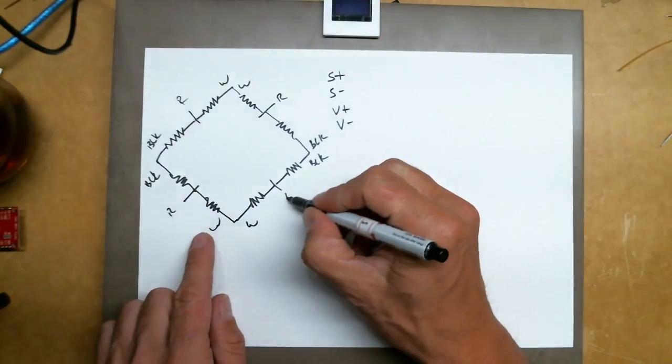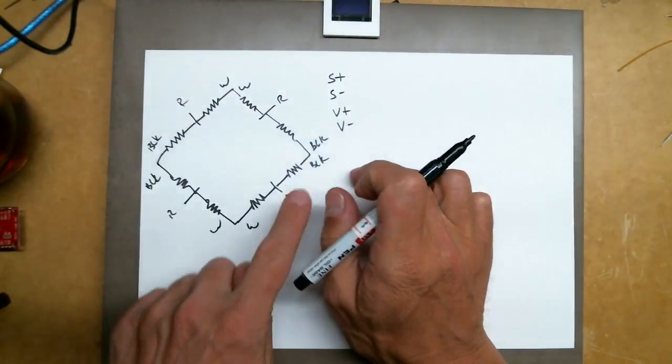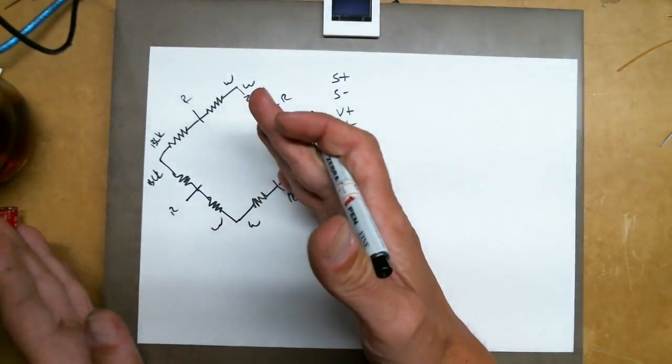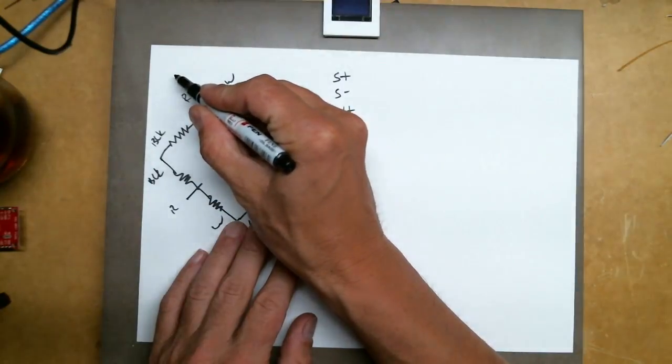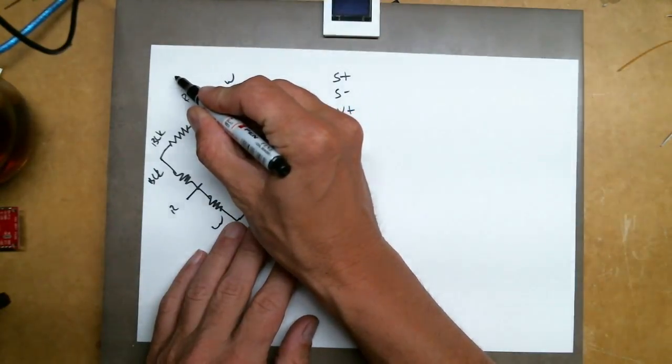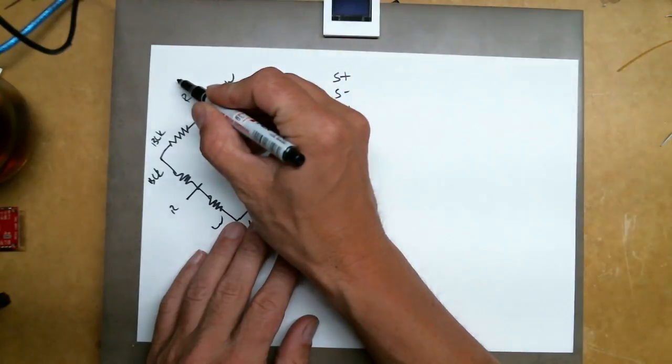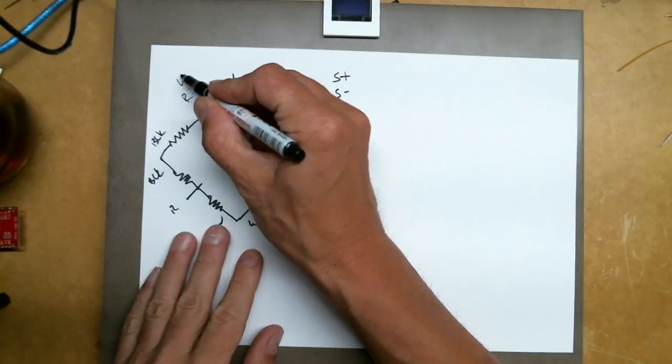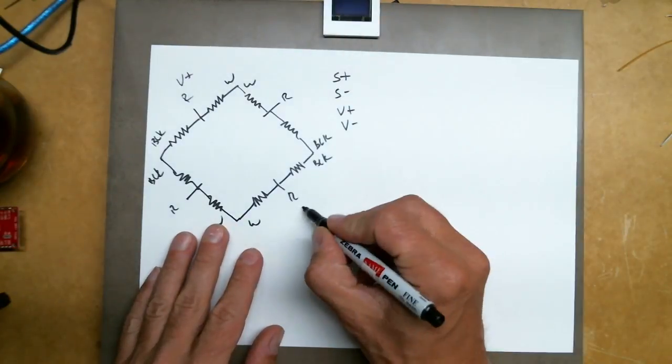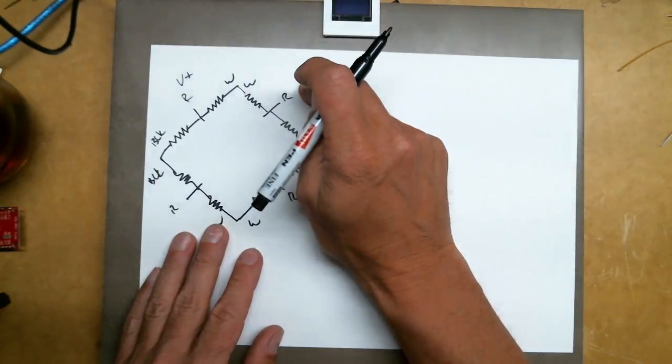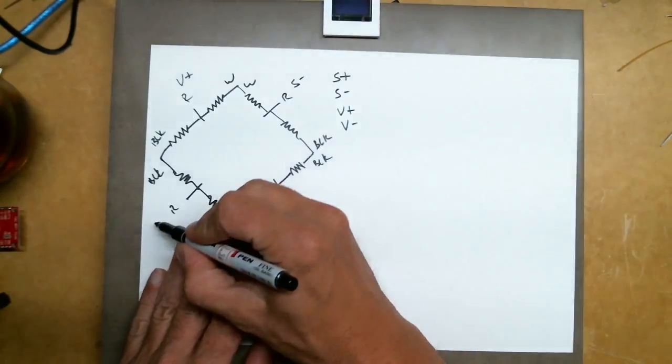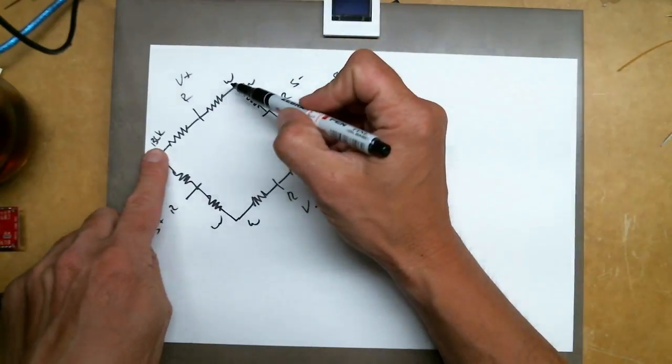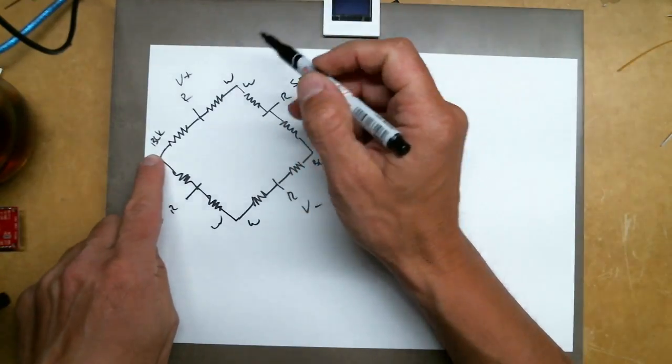You may have to figure out your own pairs. If you ended up with something that's exactly like mine, this one is a voltage plus, this one's a voltage negative, this one is a signal negative, and this one's a signal plus.